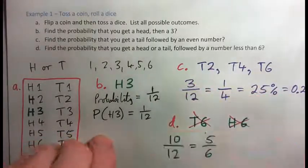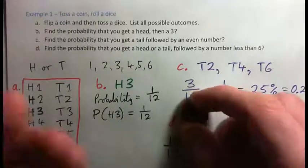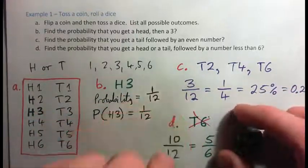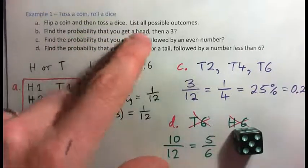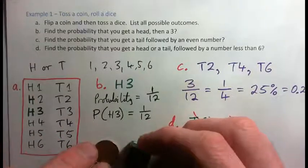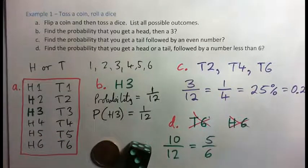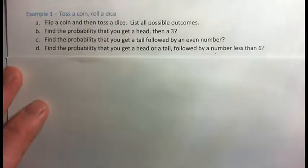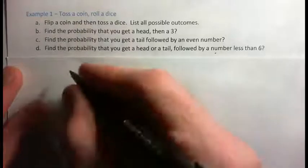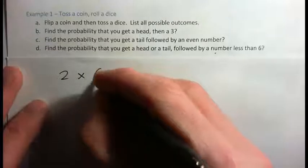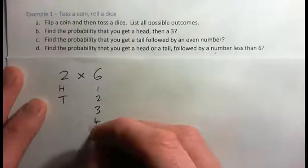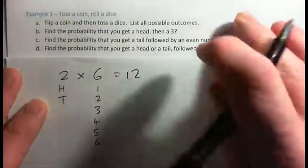Here's something to notice: the theoretical probability of getting a head is 1/2, and the probability of a specific dice number is 1/6. Multiply them together: 1/2 × 1/6 = 1/12, which matches our answer. From the coin there are 2 possible outcomes, from the dice there are 6, and 2 times 6 gives us 12 total outcomes — the multiplication principle.